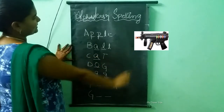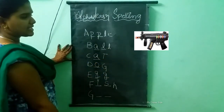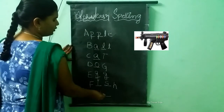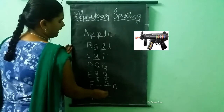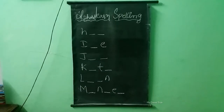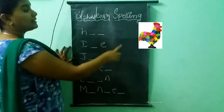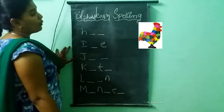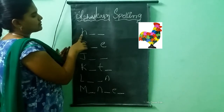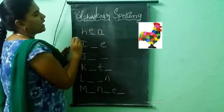What picture is this? This is a hen. What is the spelling of hen? H-E-N. Hen.